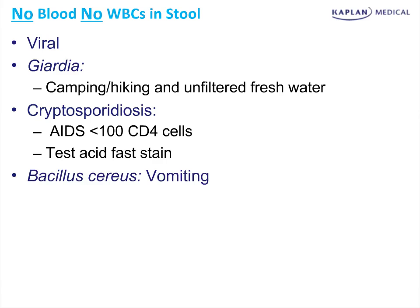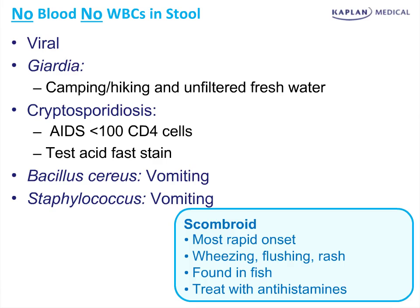Bacillus cereus is associated with vomiting, never has blood, and never has fever. Staphylococcus is the same — these preformed toxins are associated with a mild, self-limited form of vomiting and diarrhea. Scombroid is a histamine fish poisoning: very rapid in onset, associated with wheezing, flushing, and rash. It's found in fish, treated with antihistamines, and can happen 10 to 20 minutes after eating.